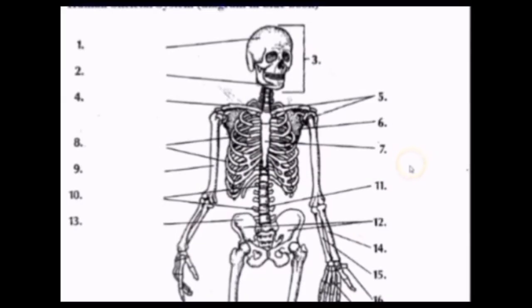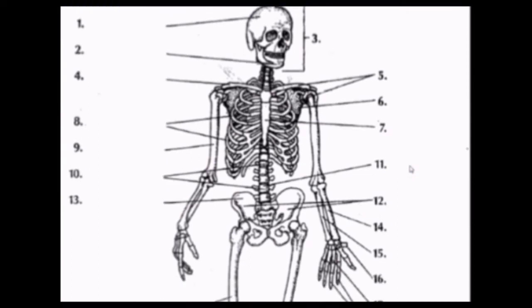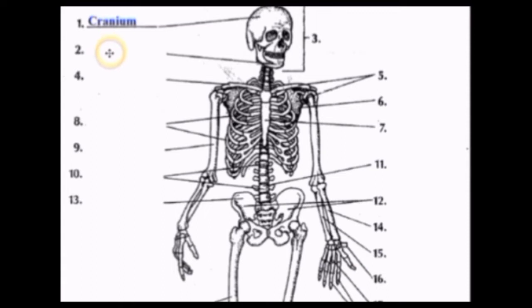Now I will describe and explain to you the parts of the skeletal system. Let's start with structure one, which is the Cranium — commonly just called the skull, but the correct term to use is Cranium.